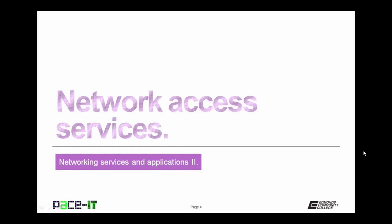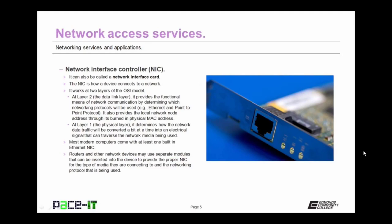I will begin with Network Access Services. The first Network Access Service I'm going to discuss is actually a piece of hardware — the Network Interface Controller, or NIC, also called the Network Interface Card. The NIC is how a device connects to a network. The NIC works at two layers of the OSI model. At layer 2, the data link layer, it provides the functional means of network communication by determining which networking protocols will be used, and provides the local network node address through its burned-in physical media access control address.